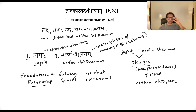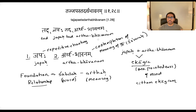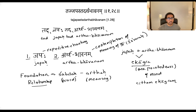Do the repetitive chanting of Om. Then 'tad artha bhavanam' — bhavanam means contemplating, allowing the mind to be filled with something. Artha means meaning. So the yogin is instructed to do the bhavanam, the contemplation, of the artha — the meaning of Om. These are the two main components of this sutra: japa, repetitive chanting, and artha bhavanam, contemplation of the meaning of Om.